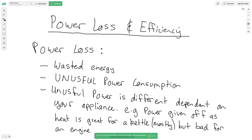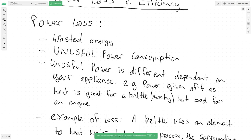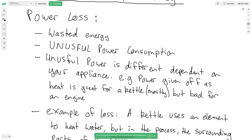So we'll start with: what is power loss? There are a few ways you can describe it — one is it's wasted energy, and a better description is it's unuseful power consumption. I've highlighted 'unuseful' in capitals because it's an important word. Unuseful power is different depending on your appliance — it's not the same in each one. Some power consumption will be a loss for one appliance, but for another appliance it may be exactly what it wants.